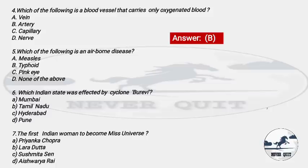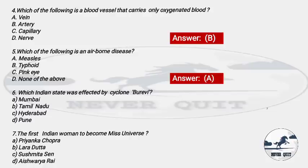Question 5: Which of the following is an airborne disease? Options: A) Measles, B) Typhoid, C) Sleeping sickness, D) None of these. The right answer is option A — Measles is an airborne disease.